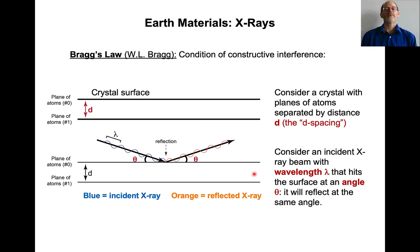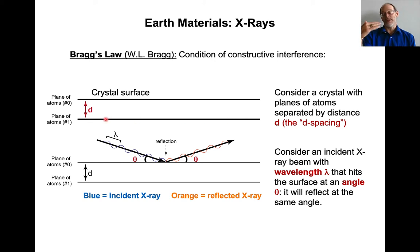So now let's develop Bragg's law. Bragg's law is basically a condition of constructive interference. Let's consider a crystal — that's the surface — and at a distance d below it, called the d-spacing, there's another plane of atoms. So a plane of atoms along the crystal surface, and another plane of atoms just below the surface.